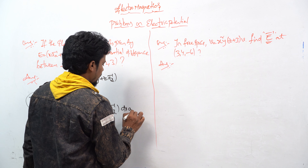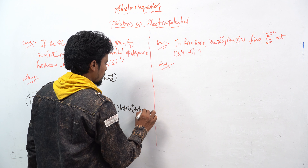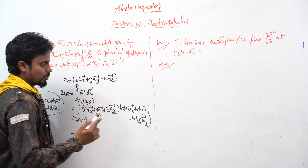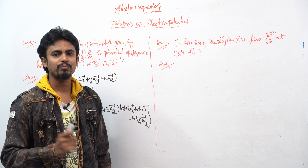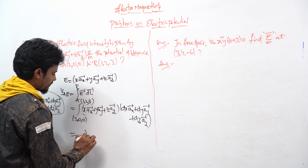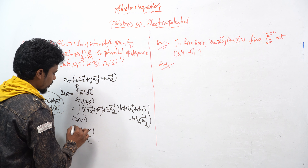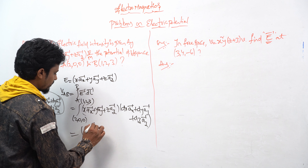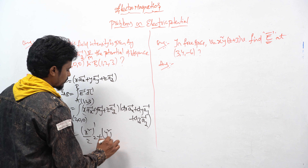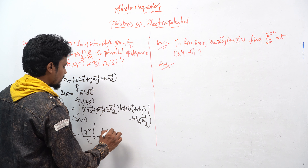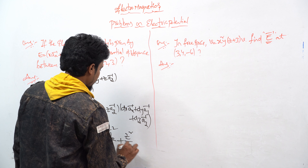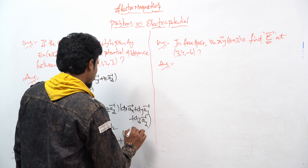E·dl̄ becomes x·dx·ax̂ + y·dy·aŷ + z·dz·aẑ. Now put the x terms, y terms, and z terms together. If you apply the x integration this will become x²/2, with lower limit 2 and upper limit 1. Plus, with respect to y, this becomes y²/2 with lower limit 0 and upper limit 2. And with respect to z, this becomes z²/2 with lower limit 0 and upper limit 3.